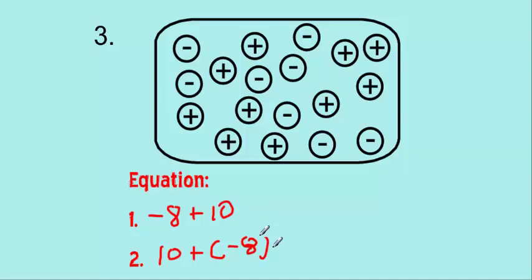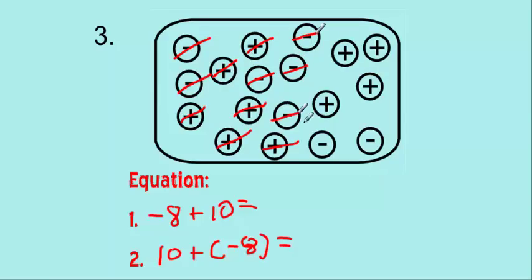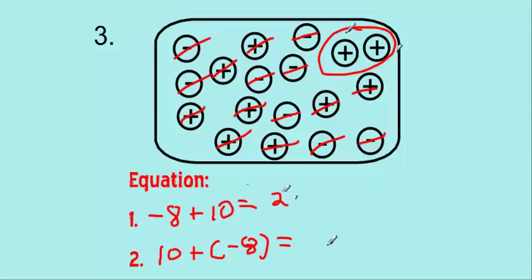Now we solve it by canceling zero pairs — a negative cancels out a positive. Going through and canceling, I'm left with a positive two. So negative eight plus ten equals two, and ten plus negative eight equals two as well.